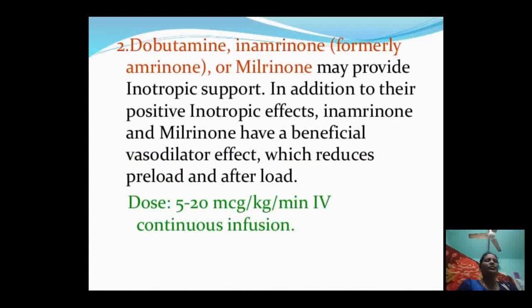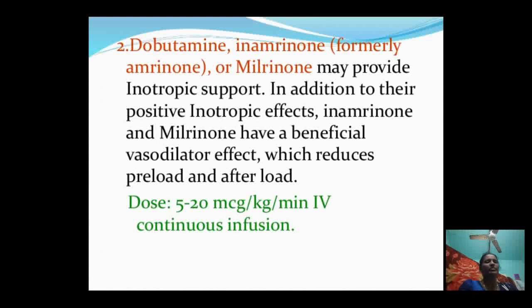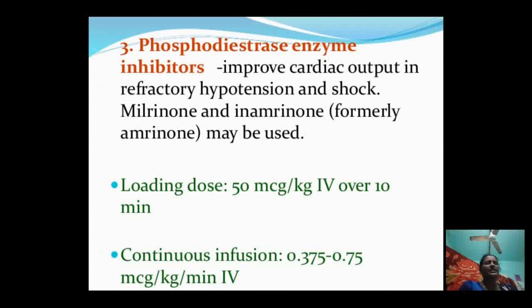Inamrinone and milrinone provide inotropic support and have beneficial vasodilator effects, reducing preload and afterload. The dose is 5–20 mcg/kg/min IV continuous infusion. Phosphodiesterase enzyme inhibitors may improve cardiac output in refractory hypotension and shock; milrinone and inamrinone may be used with a loading dose of 50 mcg/kg IV over 10 minutes, followed by continuous infusion of 0.375–0.75 mcg/kg/min.